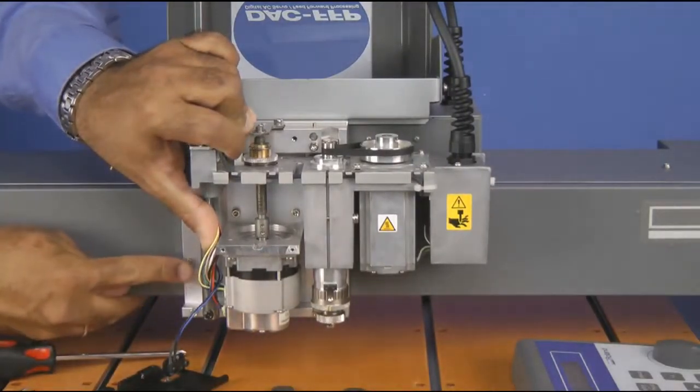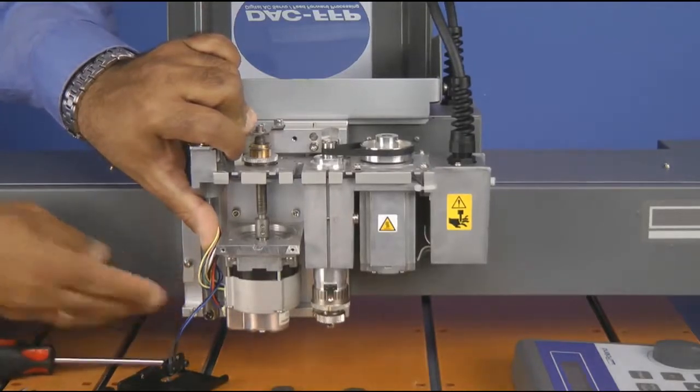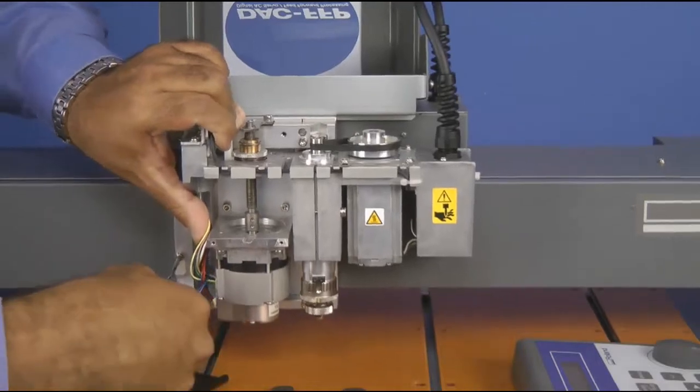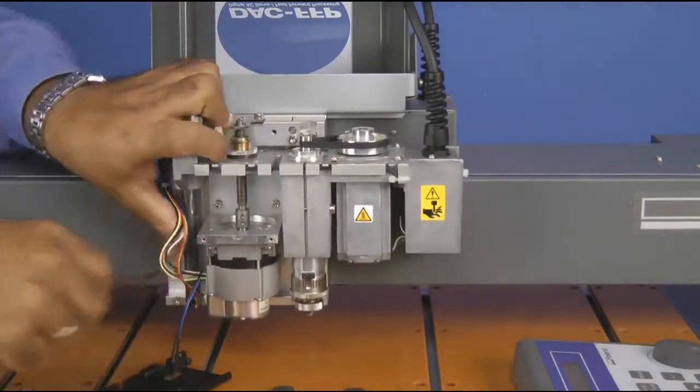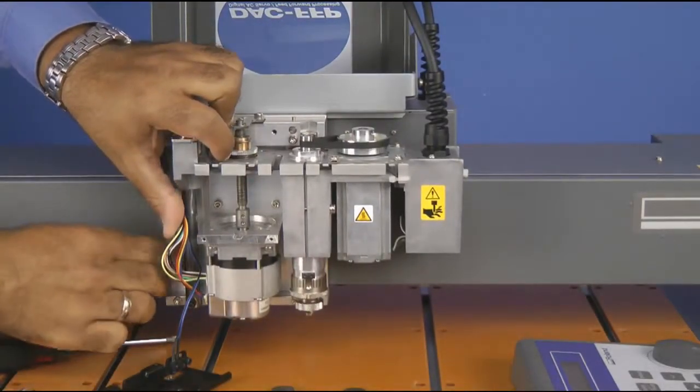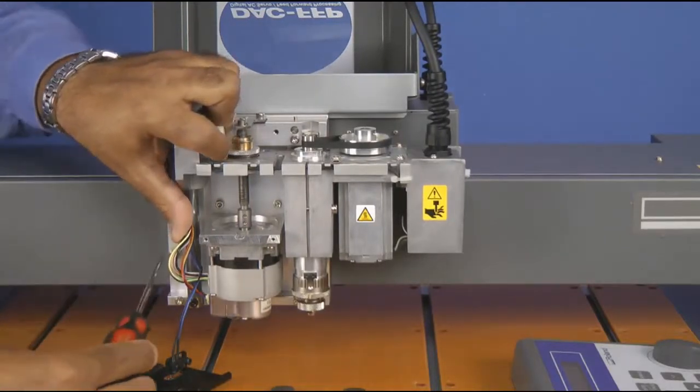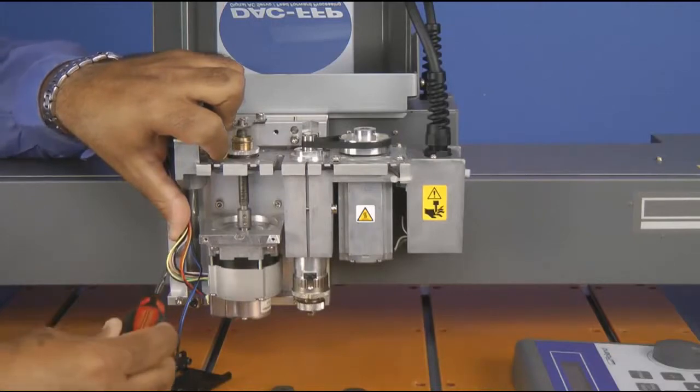What we want to do is take that tie down holder and rotate it 180 degrees. Once we rotate it, we want to go ahead and tighten the screw back up.